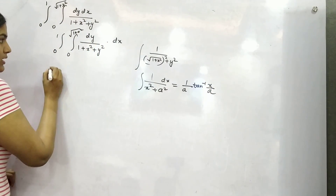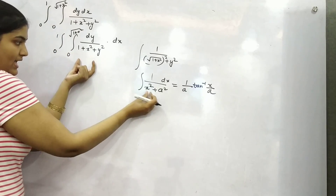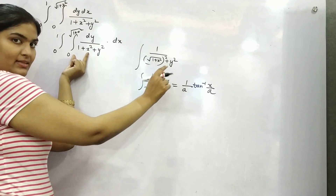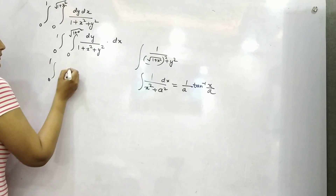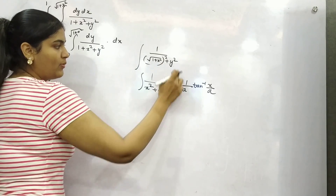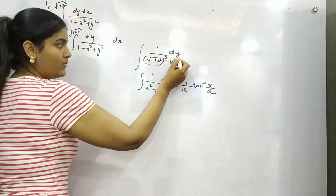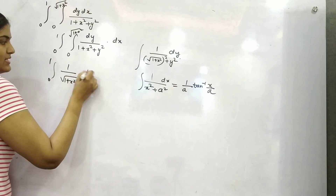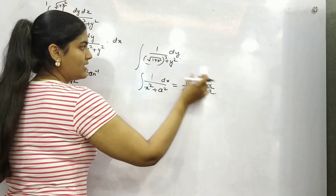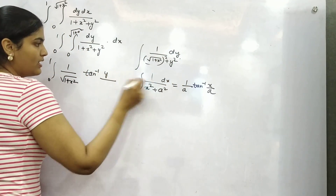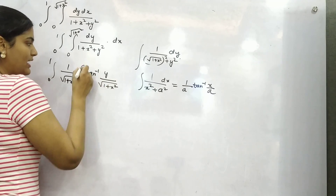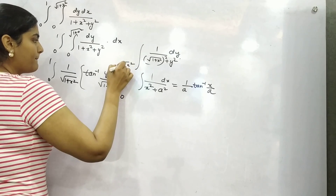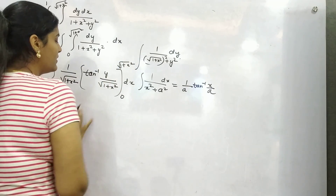Mark this down. If you want a square, split it into root 1 plus x square, whole square. You can write it like this. So comparing with the formula, 1 by a — which is your root 1 plus x square — times tan inverse. Since it is dy, it becomes y upon a, which is root 1 plus x square. The limit tends from 0 to root 1 plus x square, and dx is separate.